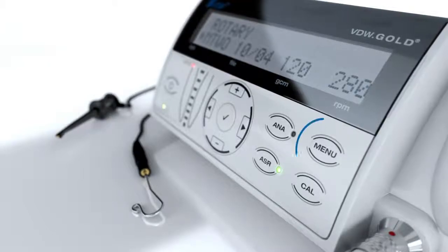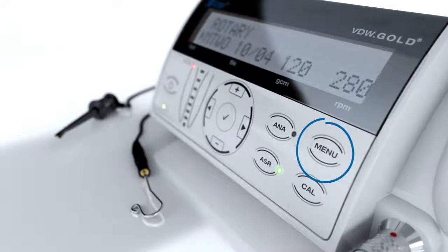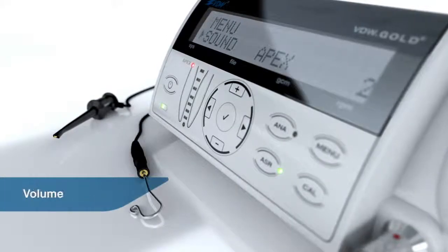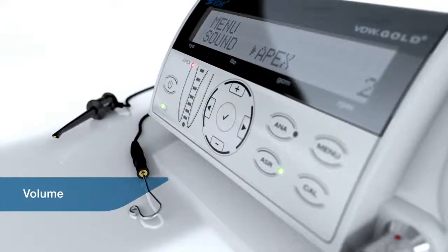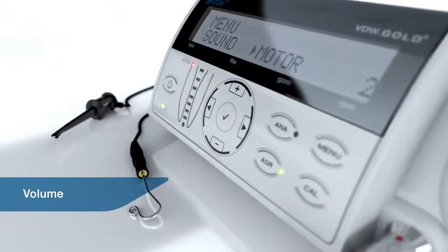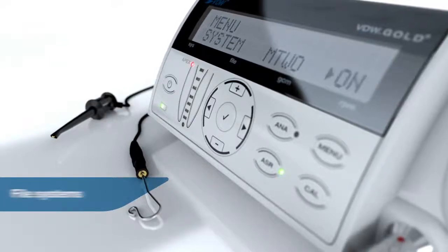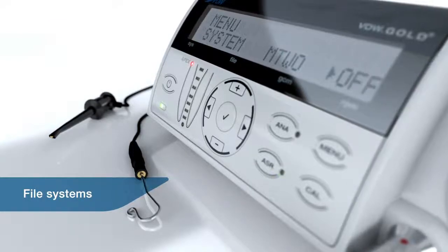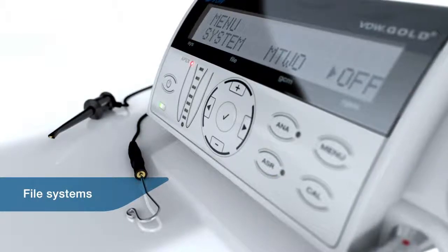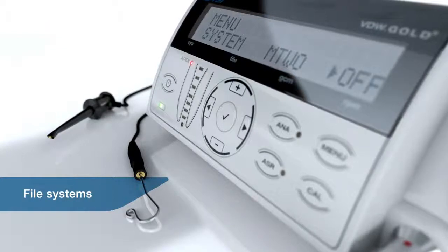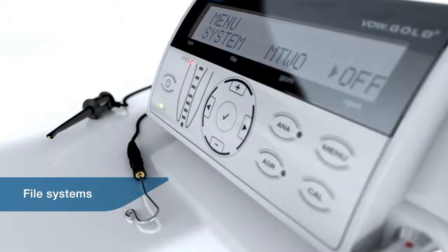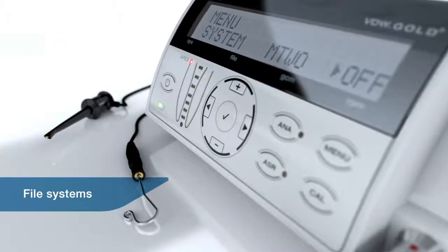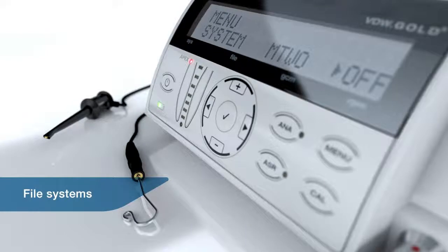By pressing the menu key, you can change settings. Volume for the motor and apex locator warning signals can be set individually. You can show and hide file systems according to personal preferences. To do this, select system with the help of the plus and minus keys. Use the right arrow key to move to the right, and then select the desired file system by using the plus or minus key.